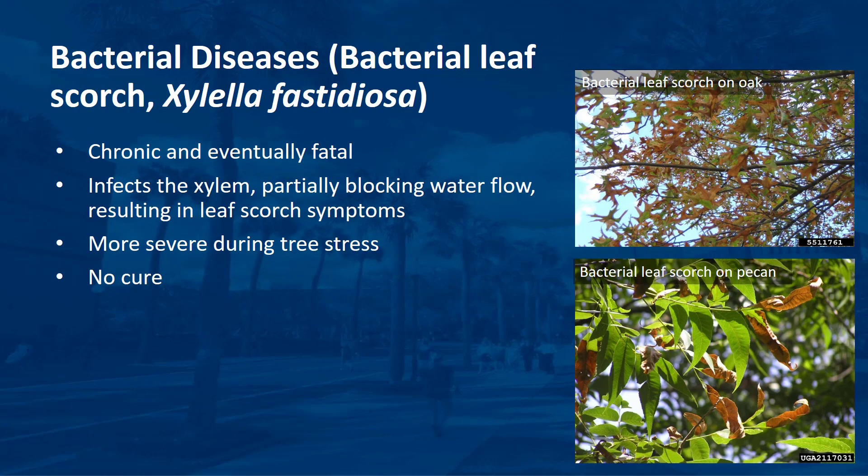Bacterial leaf scorch is a chronic disease. The pathogen infects the xylem, where it partially blocks the flow of water to the leaves, resulting in leaf scorch symptoms. Symptoms include premature leaf browning, marginal necrosis, and defoliation. Infected trees leaf out normally the following year; however, leaves on a few more branches turn prematurely brown in late summer. These events repeat themselves over several years until the entire tree turns prematurely brown. Some researchers suggest that leaf scorch symptoms are more severe during times when other stresses are placed on the tree.